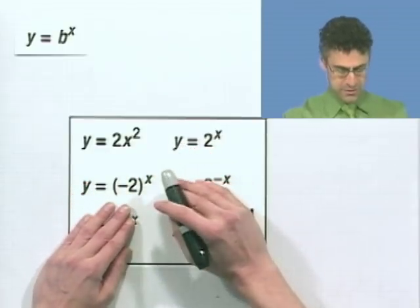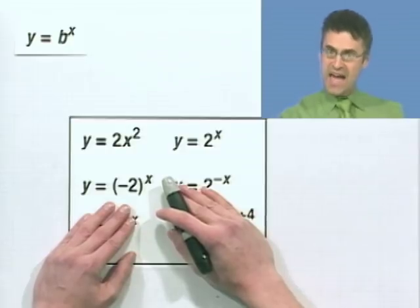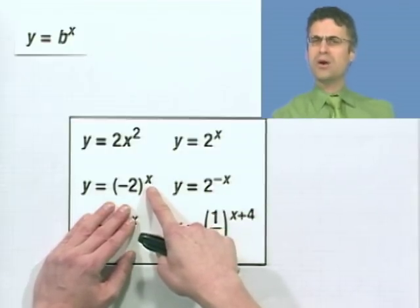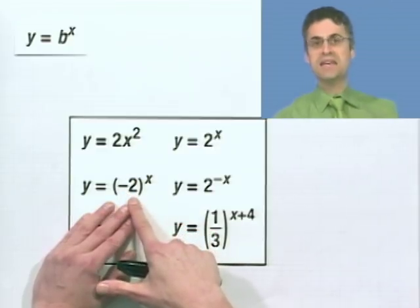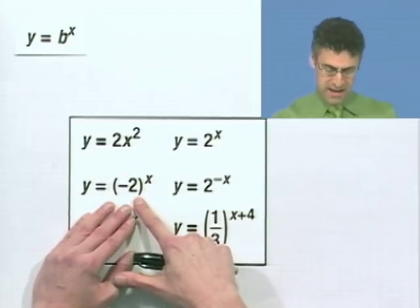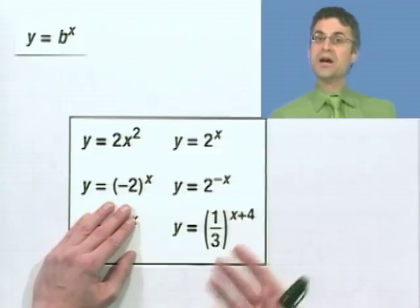How about this one? y equals the quantity negative 2 to the x. Well, I'm loving the fact that there's a variable in the exponent. Great. But the caveat is that the base can't be negative. In fact, this is a really bizarre thing to look at. If you think about it for a second, this is not even going to spit out real numbers all the time.